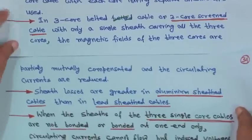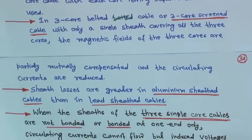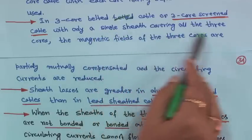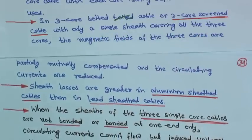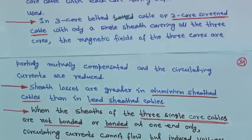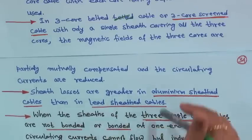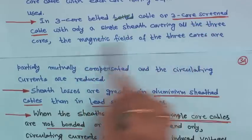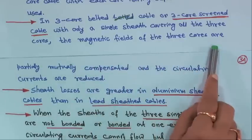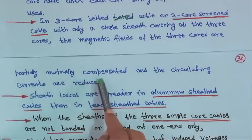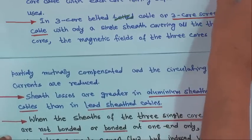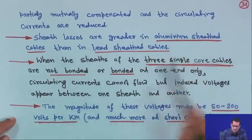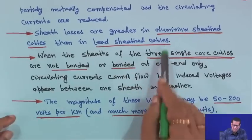In a 3-core belted cable or a 3-core screen cable with only a single sheath covering all 3 cores, the magnetic fields of the 3 cores are partially mutually compensated and the circulating currents are reduced, but sheath loss will still happen. Sheath losses are greater in aluminium sheath cables than in lead sheath cables.